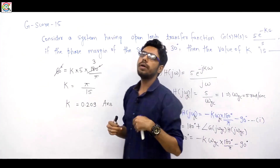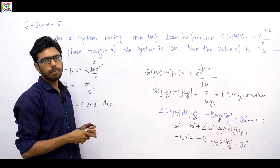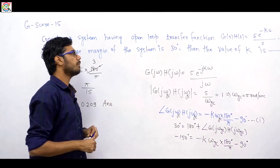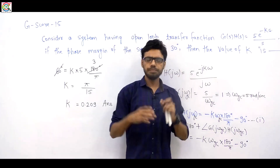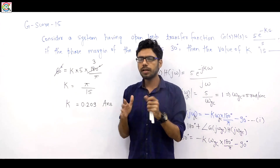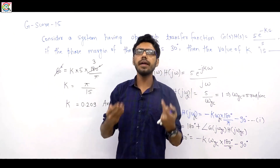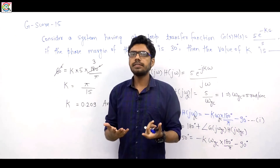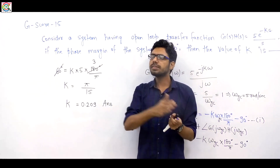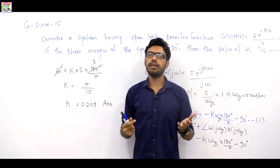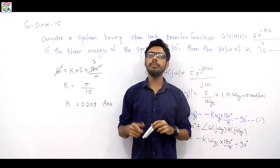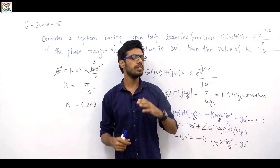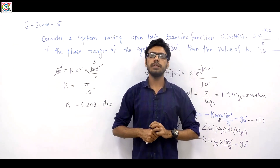This is how you deal with phase margin questions. To summarize: first find the gain crossover frequency (where the open loop magnitude = 1), then find the angle of the open loop transfer function at that frequency, and add it to 180° to get the phase margin. In the next session, we'll cover how to find gain margin, then we'll move towards Bode plots. Thank you everyone, see you in the next lecture.